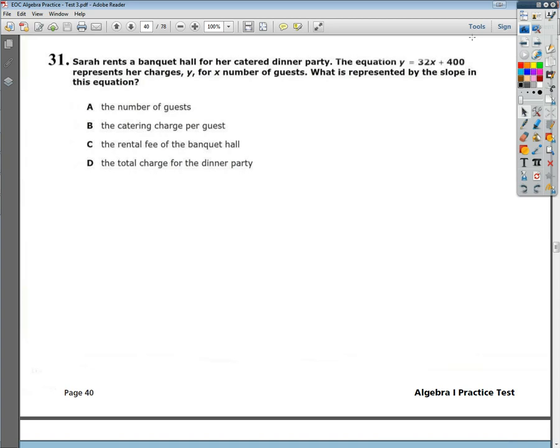The question says, Sarah rents a banquet hall for her catered dinner party. The equation y equals 32x plus 400 represents her charges, y, for her x number of guests. What is represented by the slope in this equation?